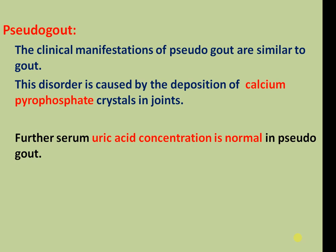Pseudo-gout: the clinical manifestations of pseudo-gout are similar to gout. However, this disorder is caused by the deposition of calcium pyrophosphate crystals in the joints, and uric acid concentration is normal in pseudo-gout.